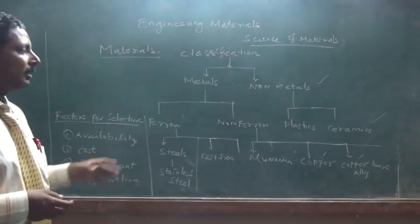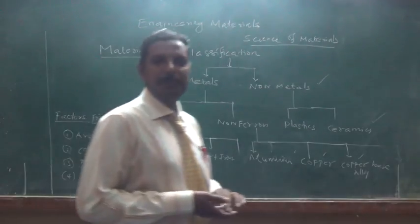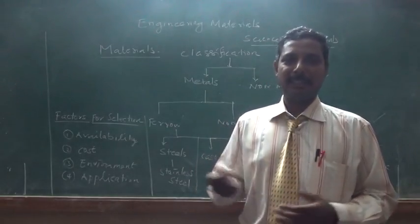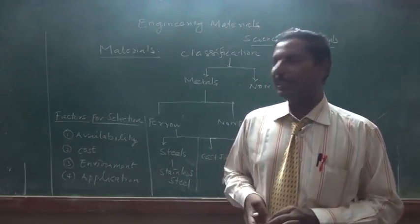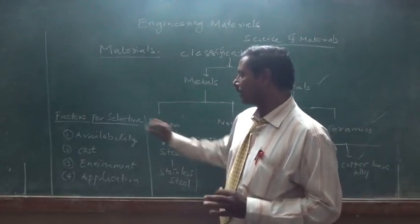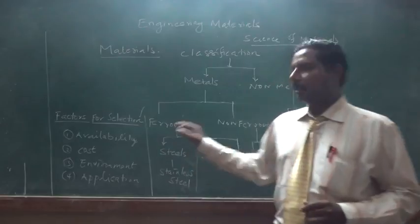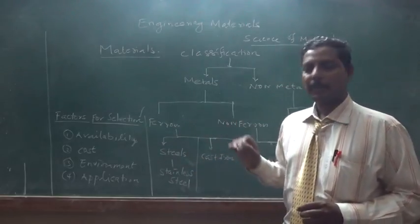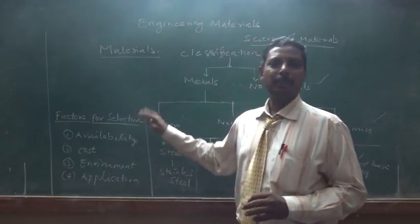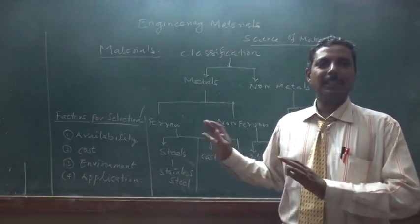Why are we going for selection of this type of materials? What are the basic criteria for selection of materials? The major factors for consideration are availability, cost, environment, and applications. These are the four major criteria we are going to consider.